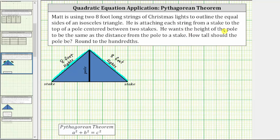He wants the height of the pole to be the same as the distance from the pole to a stake, which means this length and the length of the pole are going to be the same, as well as this length and the length of the pole, which means we can use the same variable to represent each length.